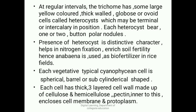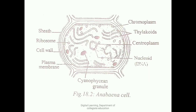Because of nitrogen fixation, Anabaena enriches soil fertility and is used as a biofertilizer in rice fields by many farmers. Each vegetative cell — a typical cyanophycean cell — is spherical, barrel-shaped, or sub-cylindrical. Each cell has a thick, three-layered cell wall made up of cellulose, hemicellulose, and pectin.